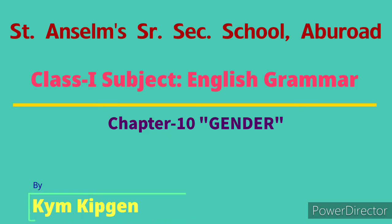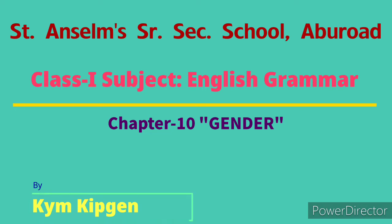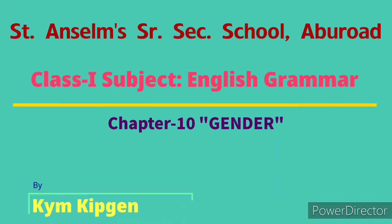In English there are four genders, namely: masculine gender, feminine gender, common gender, and neutral gender. But in today's class we will study only two genders — feminine gender and masculine gender.